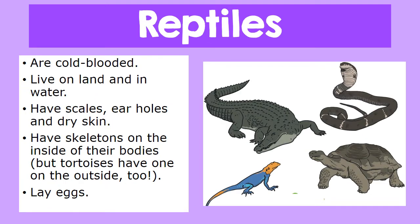The third group are the reptiles. Reptiles are cold-blooded. They live on land and in water. They have scales, air holes, and dry skin. They have skeletons on the inside of their bodies, but tortoises have one on the outside too. They lay eggs — that's how they have their young.